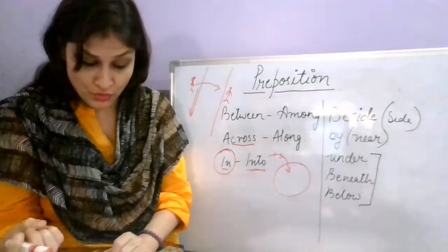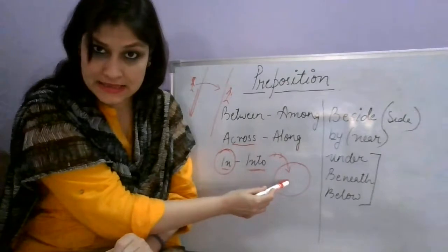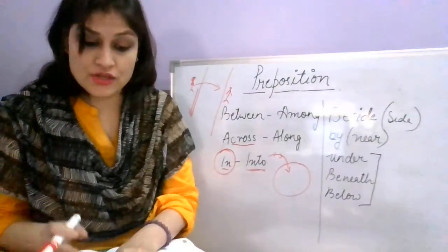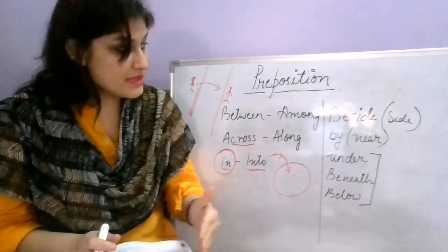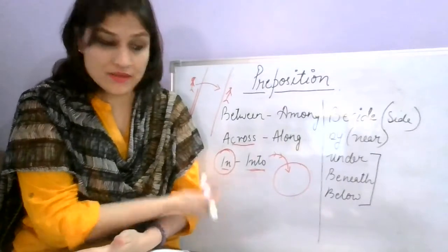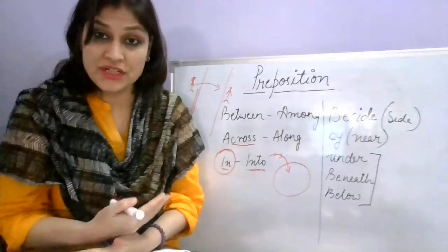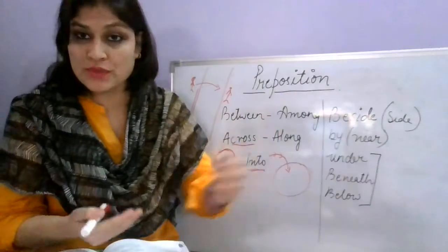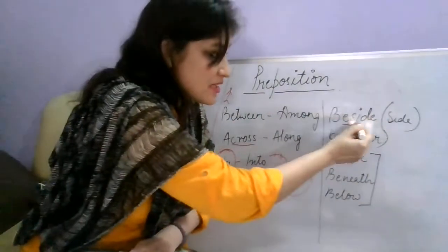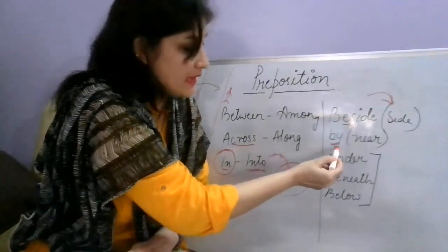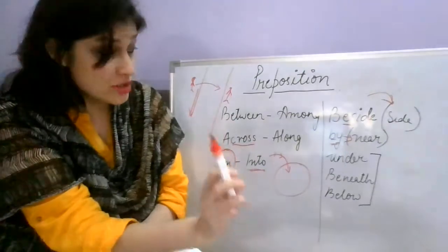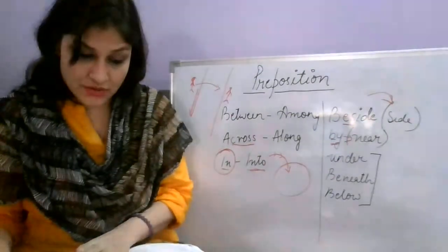Beside versus near or by: 'beside' means someone sitting right next to me, right by my side. 'Near' could mean the person is somewhere close but not necessarily right next to you. So 'beside' means just by the side, whereas 'by' means near — which could be any place, but not necessarily right by the side.